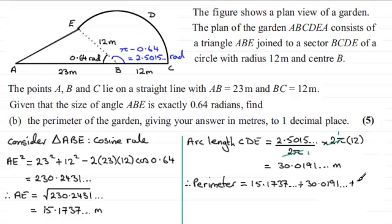And adding this up gives a total of 80.1928 and so on. We're asked to give this to one decimal place, so to one decimal place this is going to be 80.2 meters.